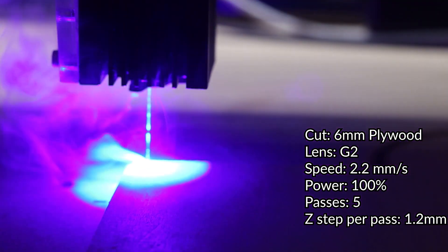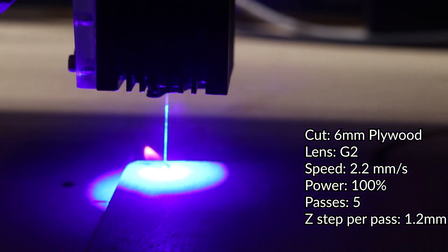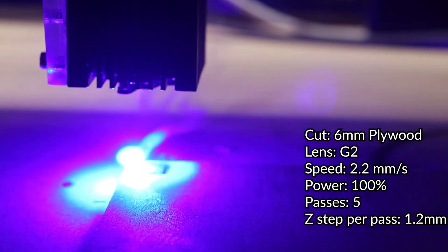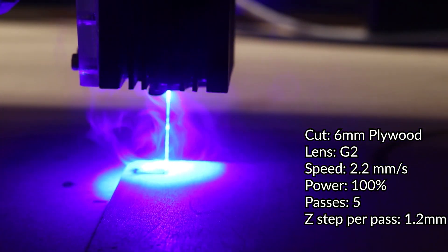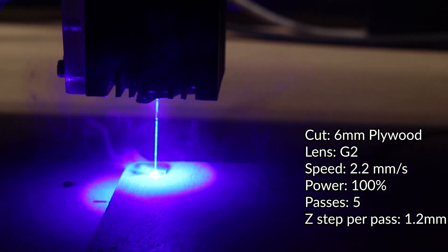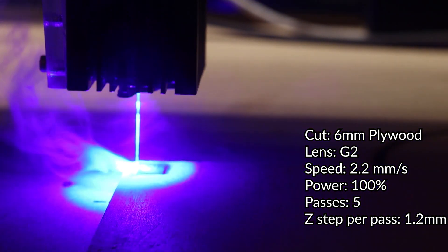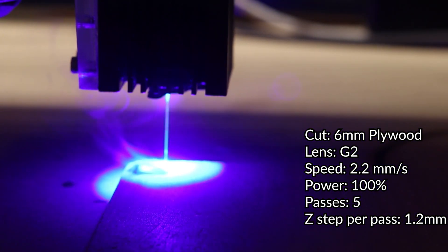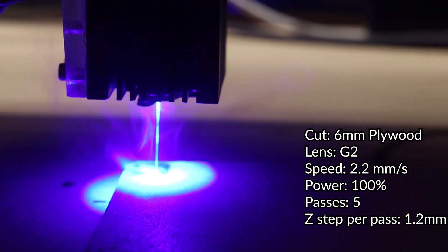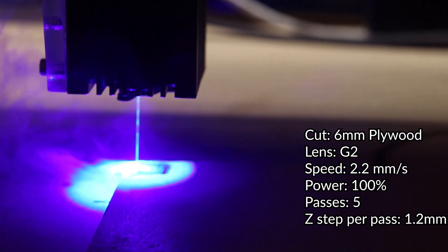Next is 6 millimeter plywood. So for this we increased the passes but we still had the same issue with the top layer being very dark at the end of our job. So again, what I would do is probably raise the speed, lower the power, and increase the amount of passes on this one.